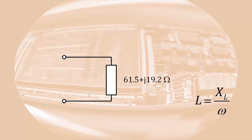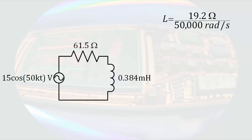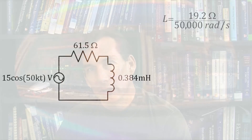This is not something we normally do, but if we were to redraw the circuit in the time domain, we would replace the voltage source as it was. The resistive component of the impedance would remain the same, and the equivalent inductance can be determined by taking the magnitude of the complex portion of the impedance and dividing by the angular frequency, giving an equivalent inductance of 0.384 mH.